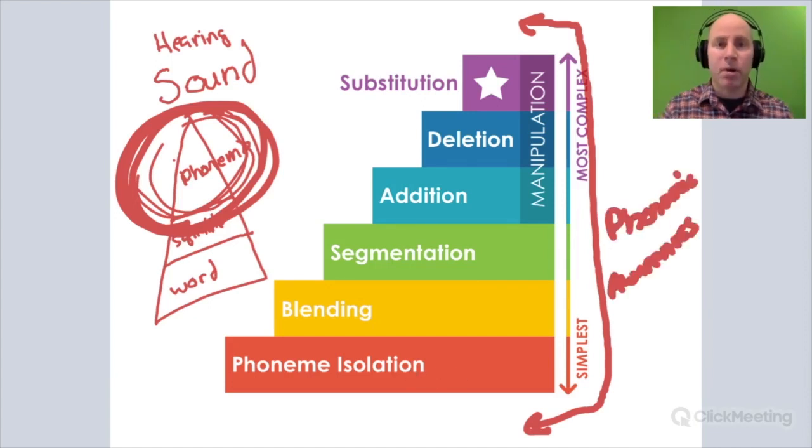Phonemic awareness can be broken into many different skills. On one end, we have phoneme isolation, which means if I say the word cat, what's the initial sound in cat? We isolate a specific sound: the first sound, the middle sound, or the end sound. If I asked you for the initial sound of cat and you said the first sound is /k/, that is an example of phoneme isolation.